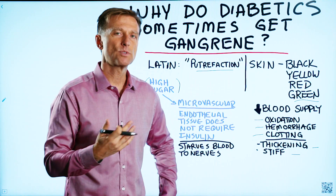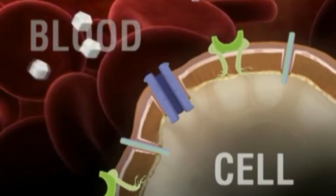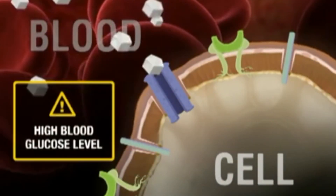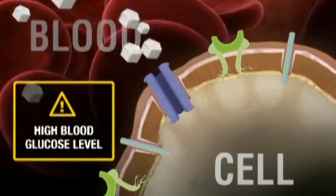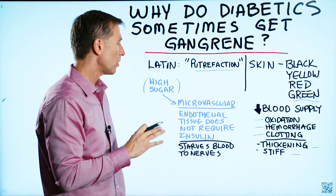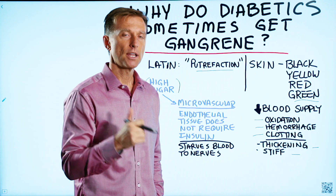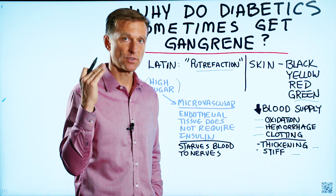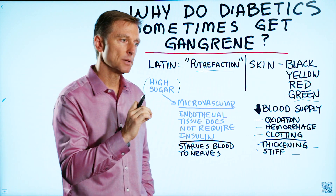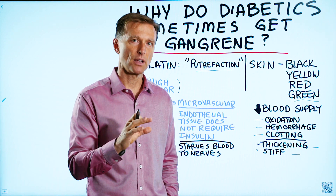If you look at insulin resistance as a protective mechanism to block insulin and glucose from going into the tissues because it's toxic at large amounts, there are certain tissues that don't require insulin, and those usually get hammered. The brain cells, for example, don't require insulin. You have the blood-brain barrier, which does, but not the actual brain cells.